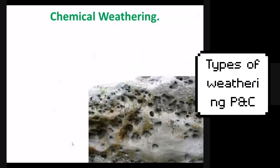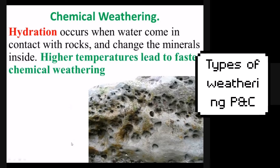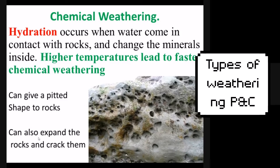Now let's talk about chemical weathering. Chemical weathering is where chemicals or water itself break down rocks, and it actually changes the structure of the rock itself. Whereas physical weathering only changed the size or shape of the rocks, chemical weathering actually changes the rocks. The first type is hydration, where water gets into the minerals within the rocks and changes those minerals into new types of minerals. This often occurs with feldspars, and since there are a lot of feldspars on earth, hydration is one of the main types of chemical weathering.